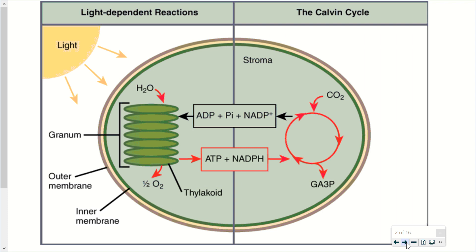Photosynthesis is divided into two different reaction types. On the left-hand side, what we have are the light-dependent reactions, or simply the light reactions. On the right-hand side, this is identified as the Calvin cycle — also referred to as the Calvin-Benson cycle, the dark reaction, or, the term I prefer, the light-independent reaction. The light-dependent reactions require light; the light-independent reactions do not.